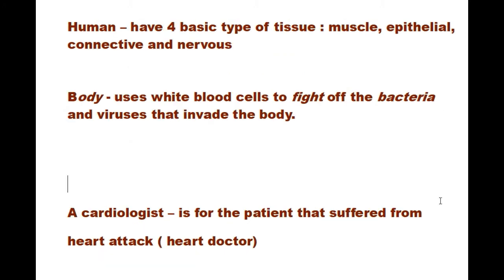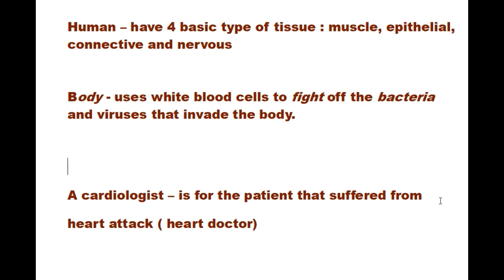Humans have four basic types of tissue: muscle, epithelial, connective, and nervous. The body uses white blood cells to fight off the bacteria and viruses that invade the body.